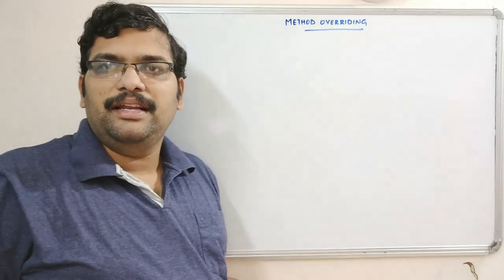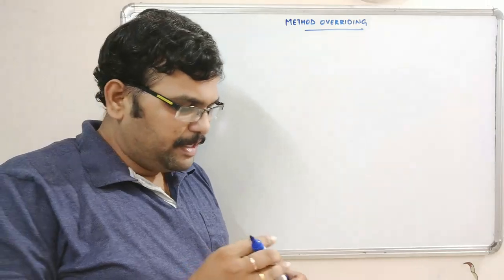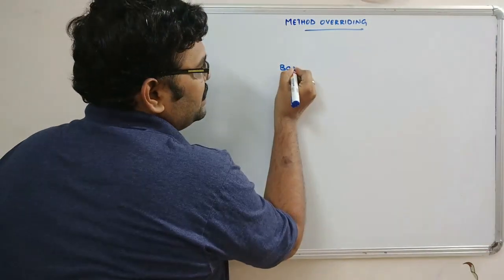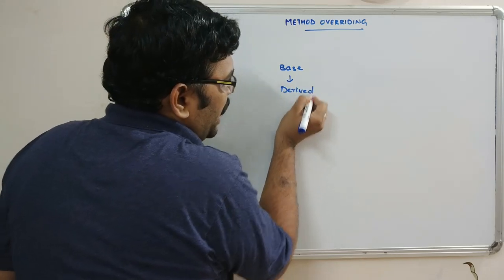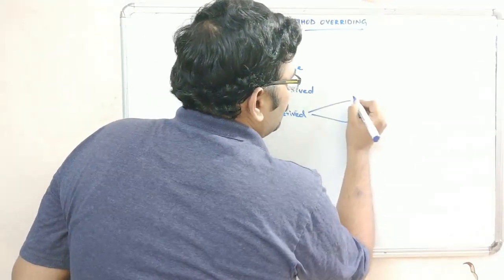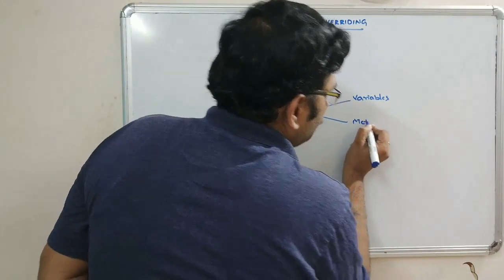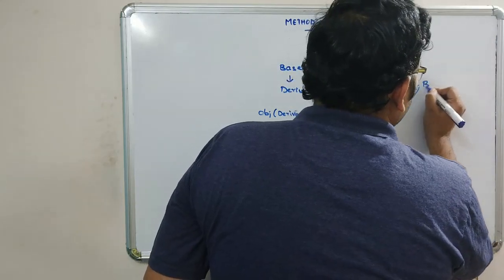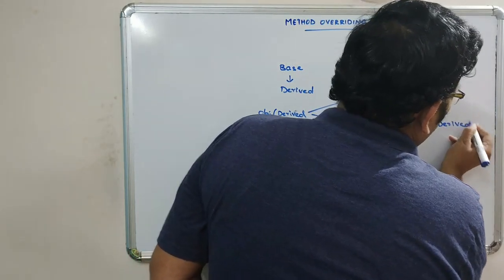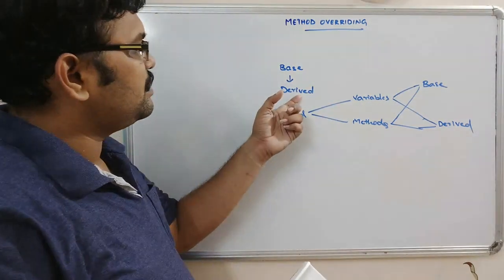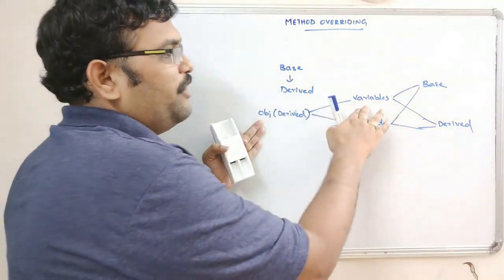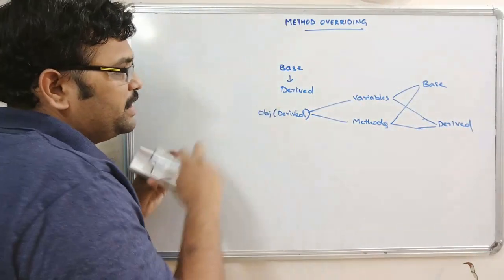In this concept we have to use the inheritance concept in order to achieve method overriding. There will be a base class and from the base class there will be a derived class. With the help of the derived class object, we can access the variables and methods of the base class as well as the derived class.